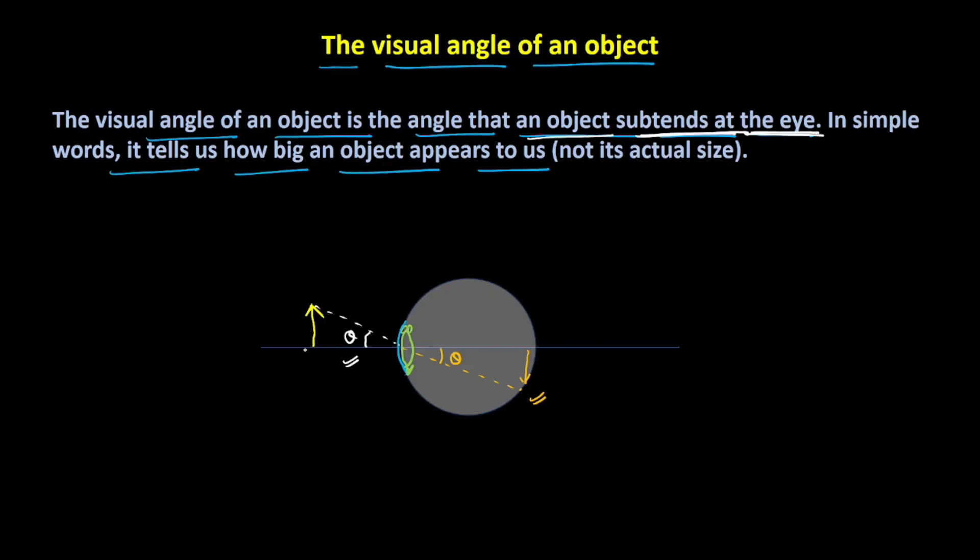For example, you can bring the object closer in order to magnify it, but that can only happen till the object is at the near distance, that is 25 cm. If you try to bring the object closer than 25 cm, the ciliary muscles would not be able to converge the light rays onto the retina and hence a clear image would not be created.